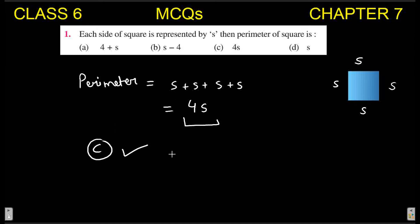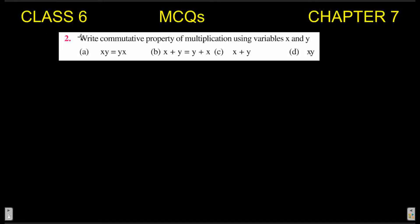Second MCQ: write the commutative property of multiplication using variables x and y. The commutative property of multiplication means that if we multiply any two numbers, regardless of the order in which we multiply them, the final product remains the same. So whether you take x·y or y·x, the result is the same.